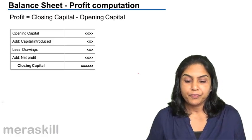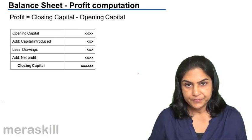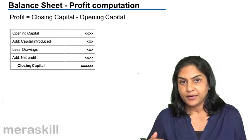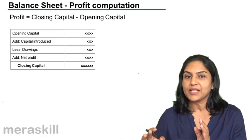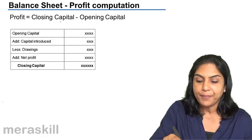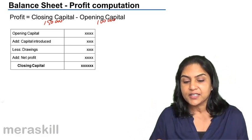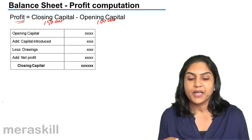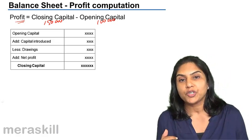Profit computation. Closing capital minus the opening capital is equal to profit. If a person starts off with a capital of 1 lakh and at the end of the year he has net assets worth 1,50,000, his closing capital is 1,50,000. Opening capital was 1,00,000. This increase in his capital must be nothing but profit. Closing capital minus opening capital is equal to profit, provided he has not brought in additional capital or he has not withdrawn any money.